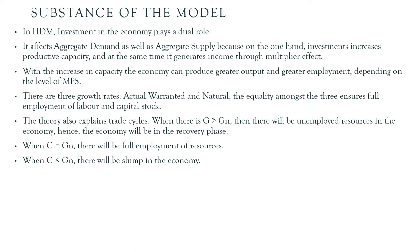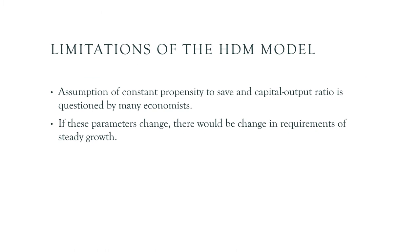The theory explains the trade cycle as well — we have seen how one growth rate moving above the other impacts the trade cycle. When the actual growth rate equals the natural growth rate, there will be full employment of resources. When the natural growth rate is higher, there will be a slump in the economy. The limitations of the Harrod-Domar model include its assumption of constant propensity to save and constant capital output ratio.